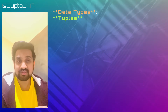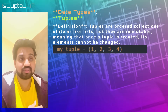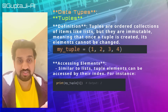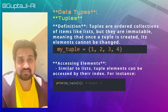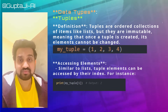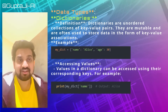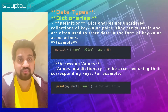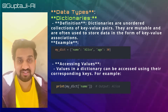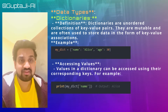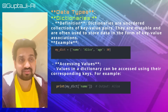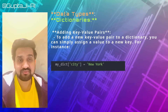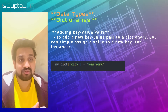Tuples are ordered collections like lists, but they are immutable — once a tuple is created, its elements cannot be changed. Similar to lists, tuple elements can be accessed by their index. Dictionaries are unordered collections of key-value pairs. They are mutable and often used to store data as key-value associations. Values in a dictionary can be accessed using their corresponding keys.